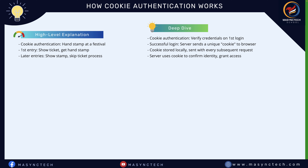In cookie authentication, the server verifies your credentials — like username and password — when you log in for the first time. If you are authenticated successfully, the server sends a unique piece of data, which is a cookie, to your browser. This cookie is stored locally on your machine and sent back to the server every time you make a subsequent request. The server then reads this cookie to confirm your identity and grant you access to the secured resources.